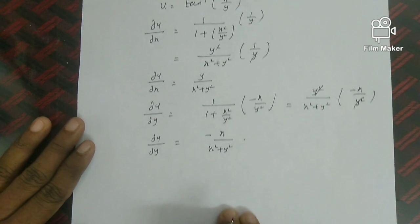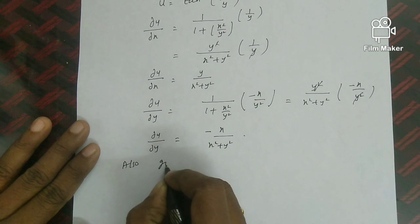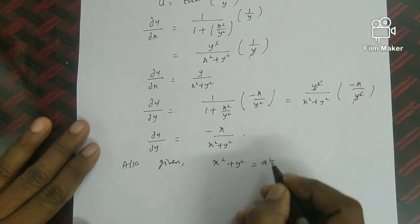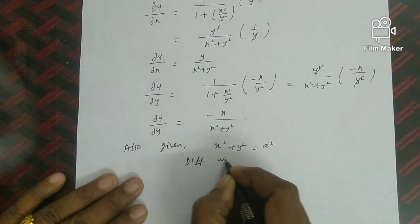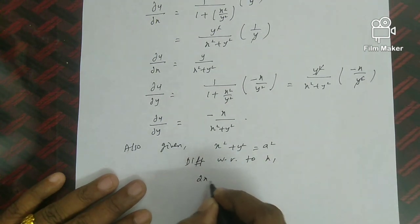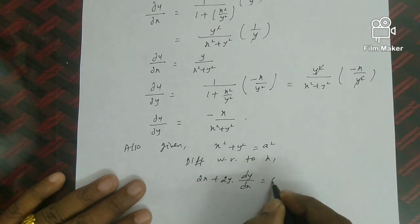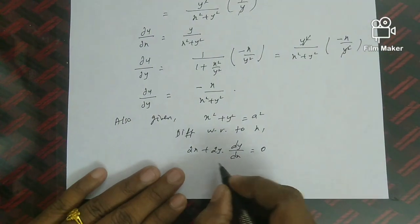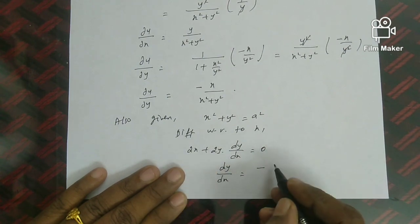Next, using the given equation x² + y² = a², differentiate with respect to x: 2x + 2y·(dy/dx) = 0 (constant differentiates to 0). Moving terms: dy/dx = −x/y.